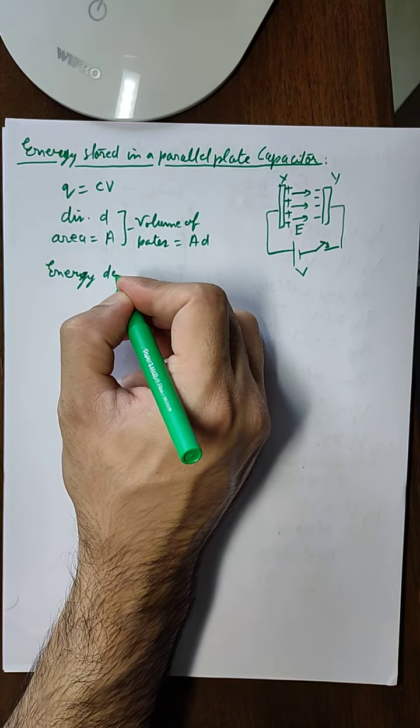Using Q equals CV, we can express this in various equivalent forms. Half CV squared can also be written as Q squared over 2C, and also as half QV. There are three forms of the total energy formula. If charge is given but not potential difference, use Q squared over 2C. If capacitance is not given but charge and potential difference are, use half QV. But the most important form to remember is U equals half CV squared.